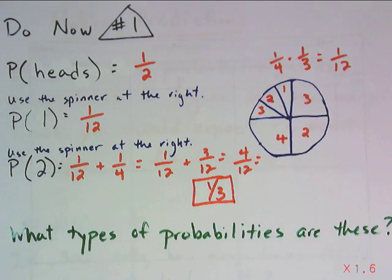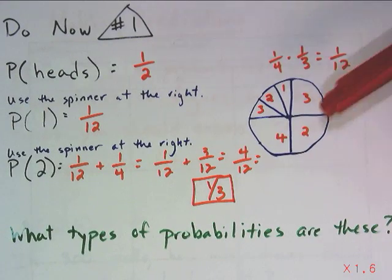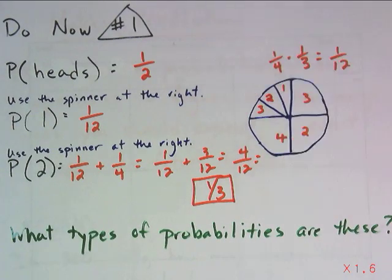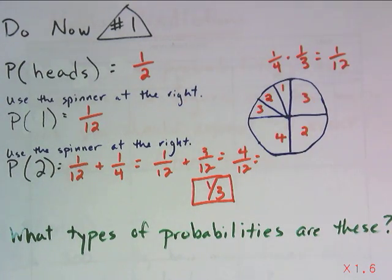And last but not least, what types of probabilities are these? Each of these is an example of simple probability because they're each finding the probability of one specific event.